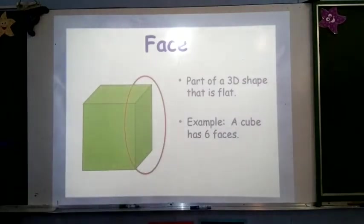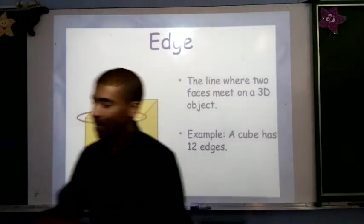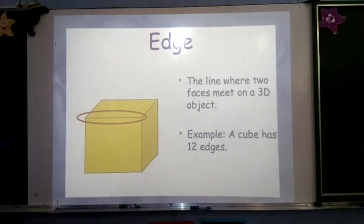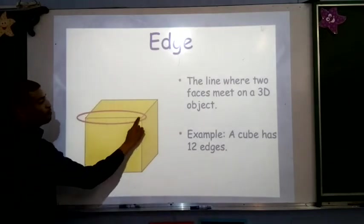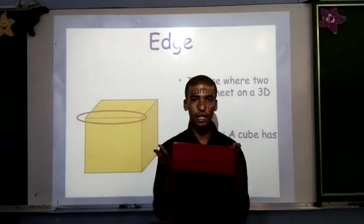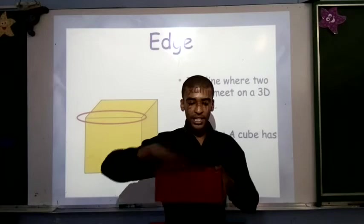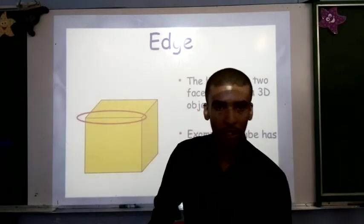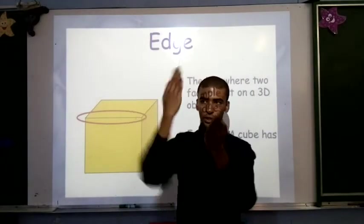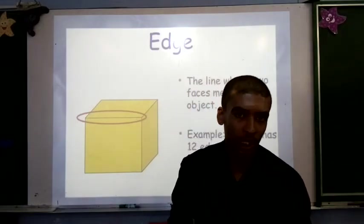The other thing we need to look at with our 3D shapes are what's called our edges. Our edges are when two faces are meeting. So, going back to our rectangular prism, where two faces meet, where those two lines connect, or those two flat surfaces connect, that is what's called our edge.